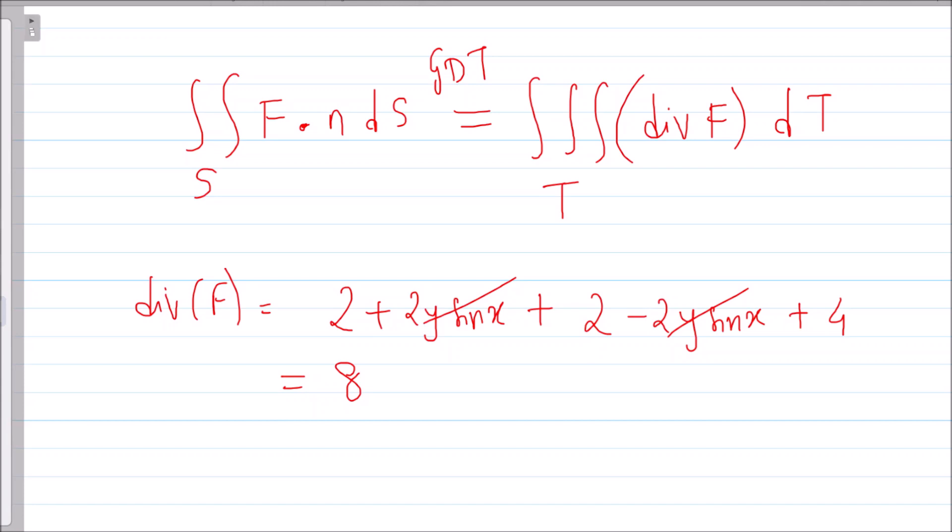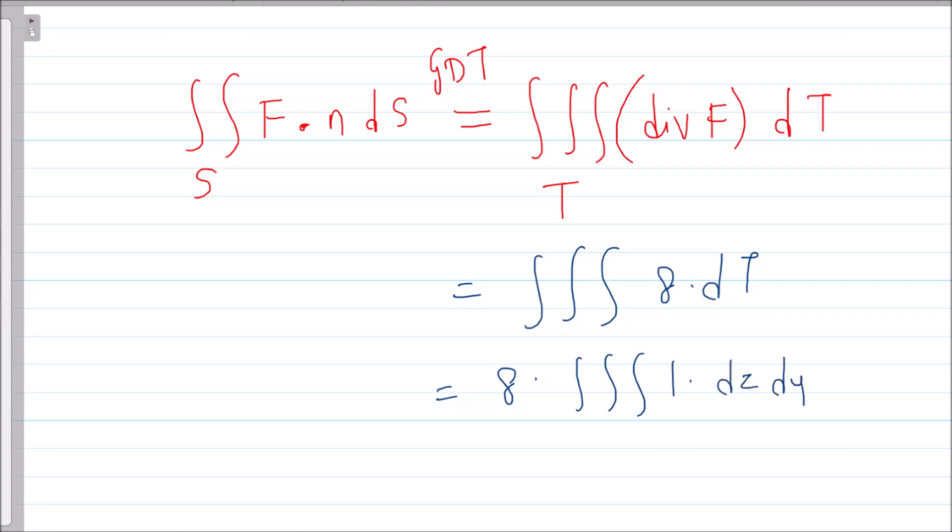So if I erase this, now I think this is clear. By Gauss divergence theorem, my surface integral is nothing but triple integration 8 times dT. So this is 8 times triple integration of 1, this is dz dy dx. So this is nothing but the volume of the tetrahedron in the first quadrant.